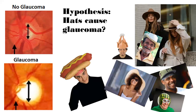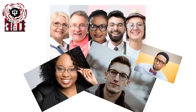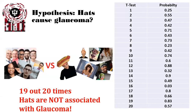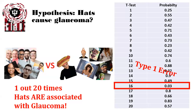Let's come up with a hypothesis that has no basis in reality. Let's pretend we hypothesize that hats cause glaucoma. Now, we can have multiple comparisons — we can compare people who do or do not have hats. If we compare those who wore hats versus those who didn't, 19 out of 20 times hats would not be associated with glaucoma, because there's no connection whatsoever between hat wearing and glaucoma.